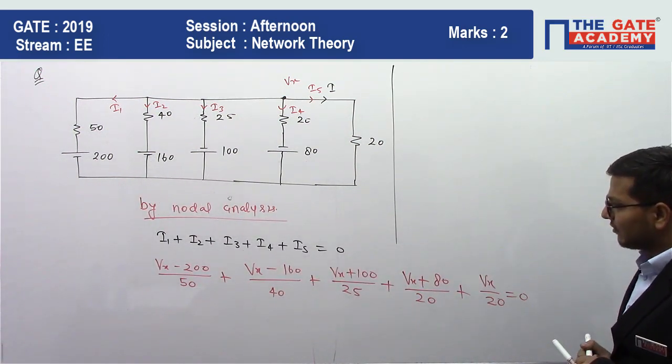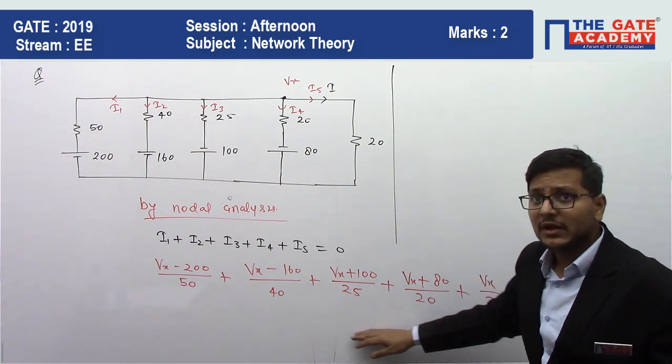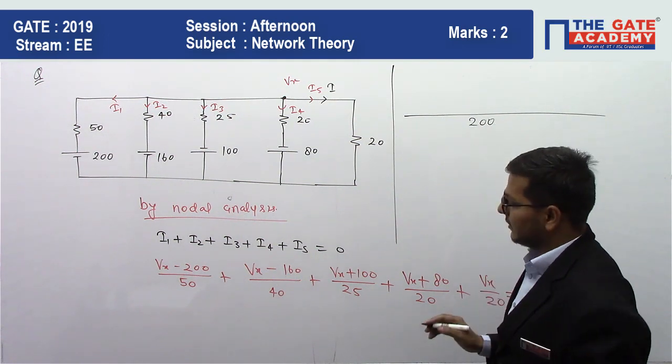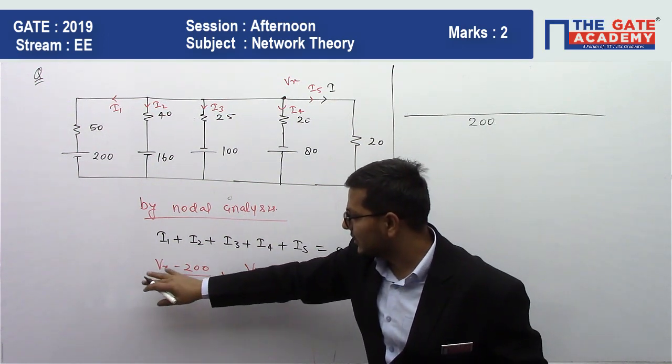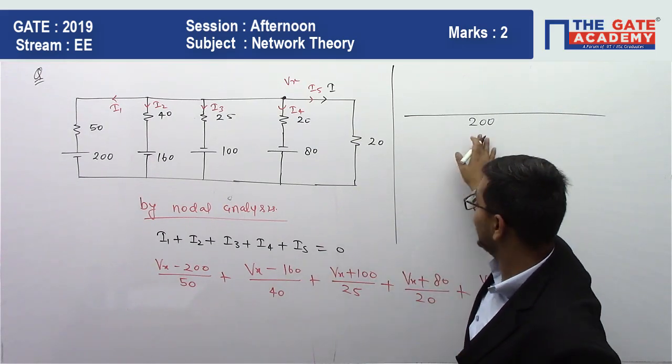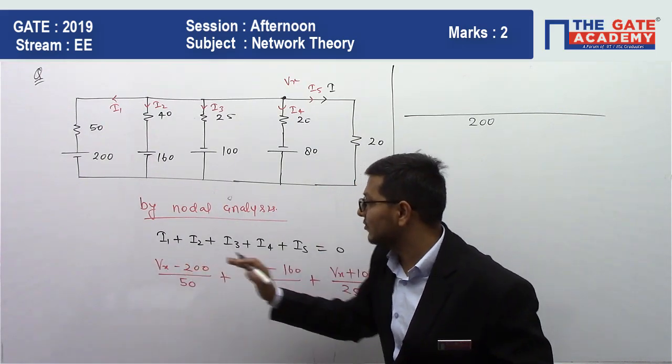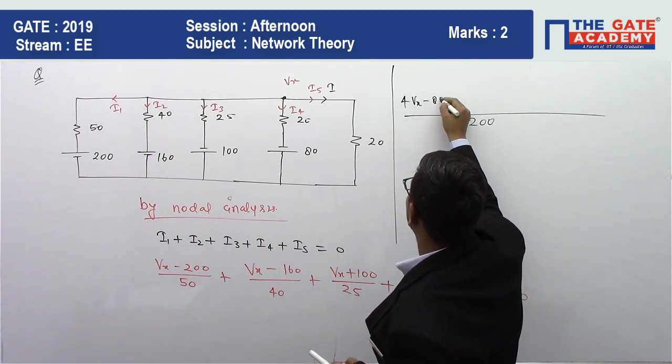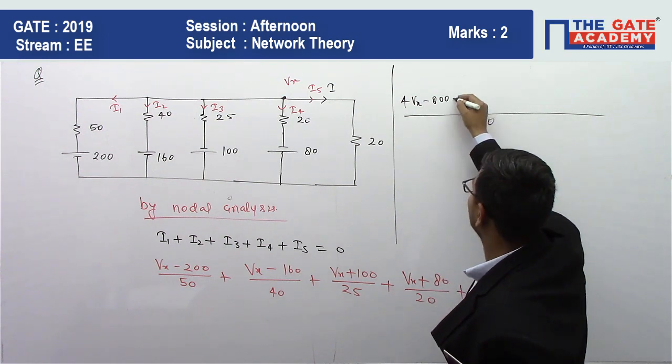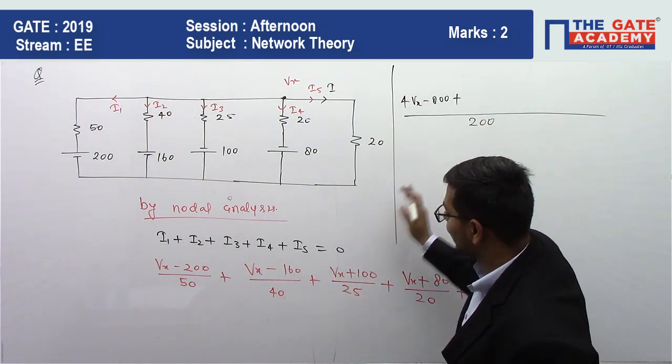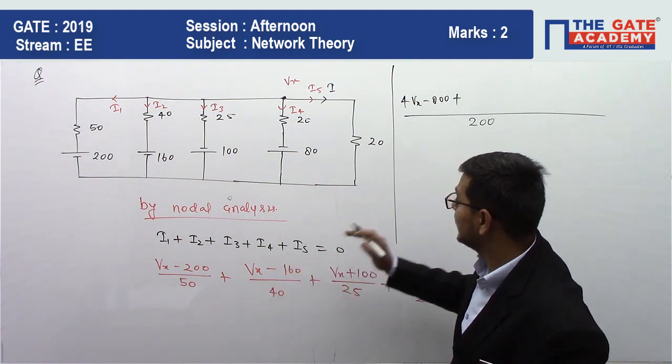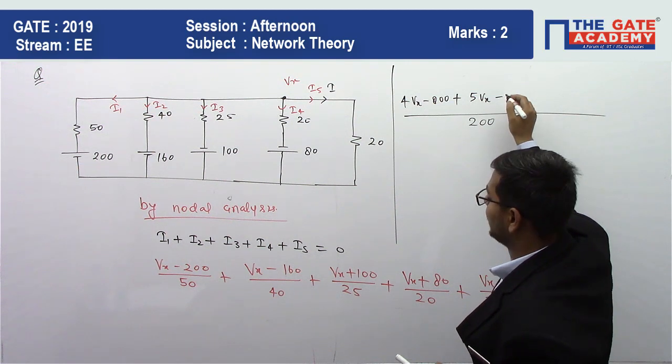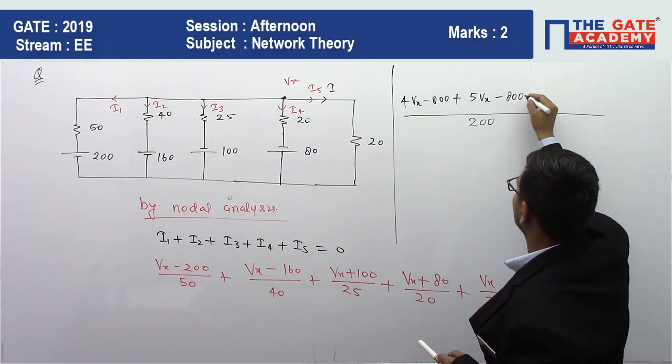Now I am going to solve this equation. This equation can be solved just by taking the LCM. Suppose the LCM is 200. After dividing, 50 divided by 50, we can get 4. Multiply 4 with this equation, it will be 4Vx minus 800. Plus 200 divided by 40, we can get 5, and it will be equal to 5Vx minus 160 into 5 equal to 800.